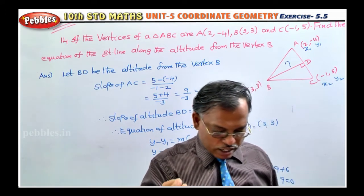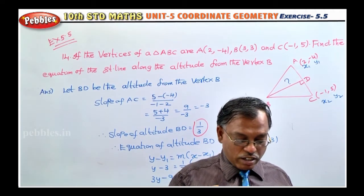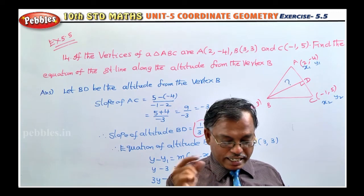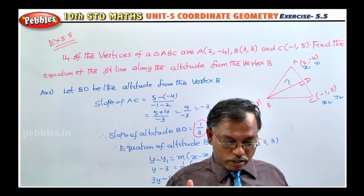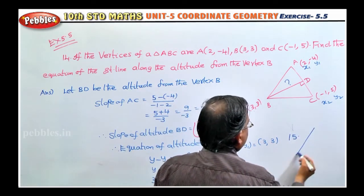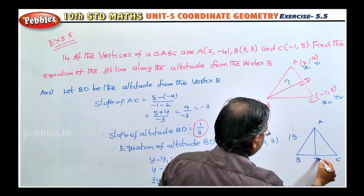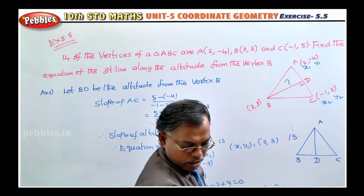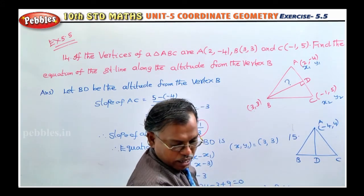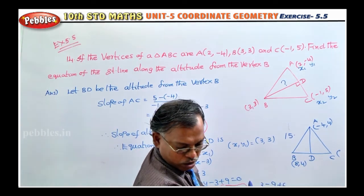Now we will see the 15th problem — same model, but instead of altitude, they ask for the median. Three vertices are given: A(-4, 4), B(8, 4), C(8, 10). Find the equation of the straight line along the median through vertex A.